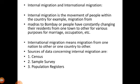Internal migration is the movement of people within a country — for example, migration from Madras to Bombay, or people constantly changing their residence from one town to another for various purposes such as marriage or occupation. International migration means migration from one nation to another or one country to another. Sources of data concerning internal migration include the census, sample surveys, and population registers.